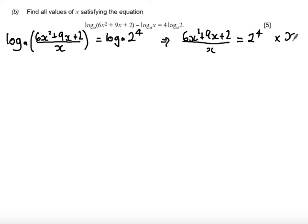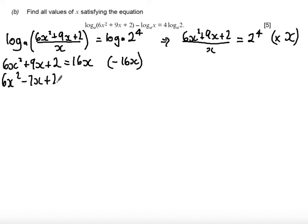So I'm going to times both sides by x to get rid of that denominator. So on the left hand side I have 6x squared plus 9x plus 2 is equal to 2 to the power of 4 is 16x. And so I'm left with a quadratic to solve. If I subtract 16x from both sides in order to get this equation equal to 0, I get 6x squared minus 7x plus 2 equals 0.